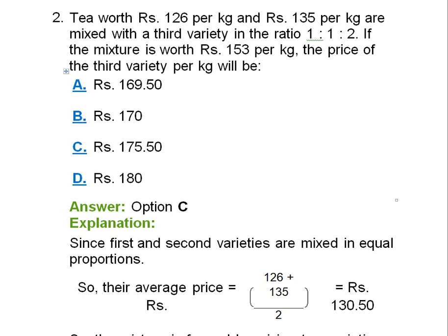This problem was given in part one as the homework problem. Tea worth Rs. 126 per kilogram and Rs. 135 per kilogram are mixed with a third variety in the ratio 1:1:2.